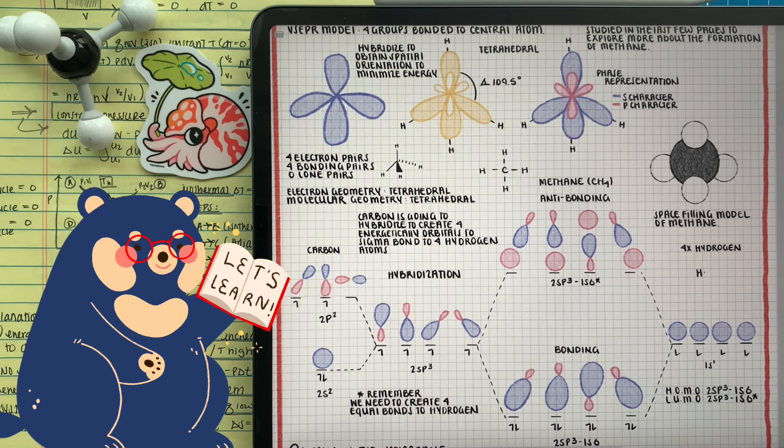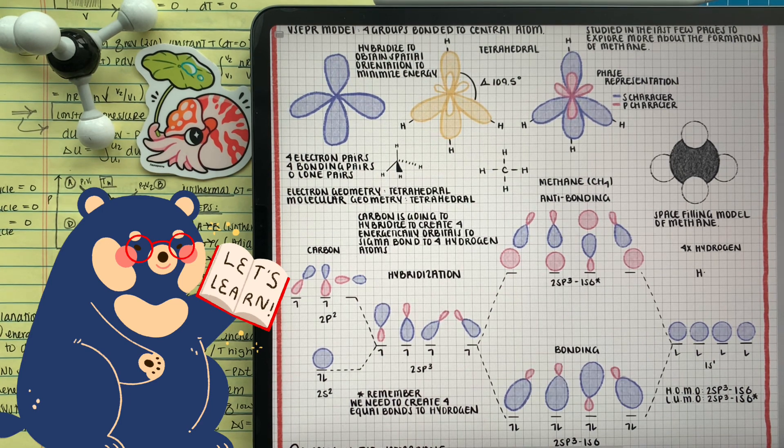But do you see how the sigma bond between the two sp3 orbital and the 1s orbital from the hydrogen in the molecular diagram is a little bit bigger in the blue side than with the carbon hybridized orbitals? That's because of phase interactions, because they're constructive. But you see, in the anti-bonding, they're smaller because of destructive interactions.